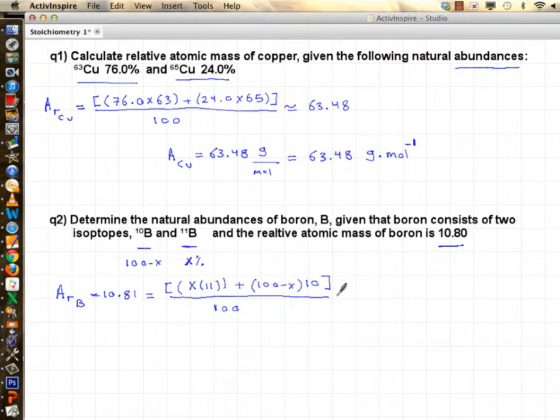And then once I find x, I know the abundance of the heavy one, and I subtract from 100, I know the lighter one. Now what I'm going to do is multiply both sides of equality by 100 to get rid of the denominator. So 1081 is equal to 11x plus 1000 minus 10x.